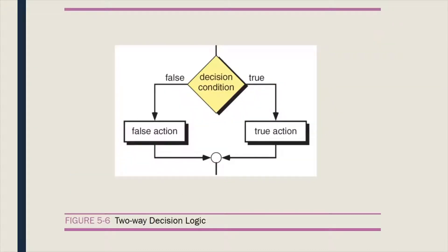This figure shows the two-way decision logic. The decision condition is placed inside a diamond shape and it will evaluate to either true or false. If the condition is true, the true actions will be executed. If the condition is false, the false actions will be executed. There are actions that will not be executed — this is the nature of the two-way decision logic.